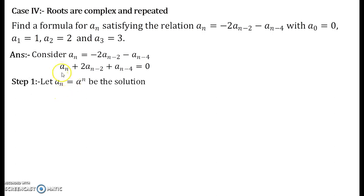Now step one will be to let a_n = α^n be the solution. So the given recurrence relation gets converted into this format: α^n + 2α^{n-2} + α^{n-4} = 0. Now you observe that α^{n-4} is the smallest power over here. So in that case you divide by α^{n-4} on both sides and you obtain the following expression: α^4 + 2α^2 + 1 = 0.